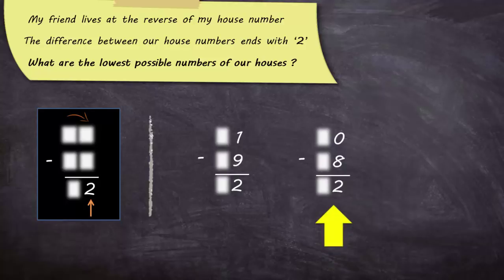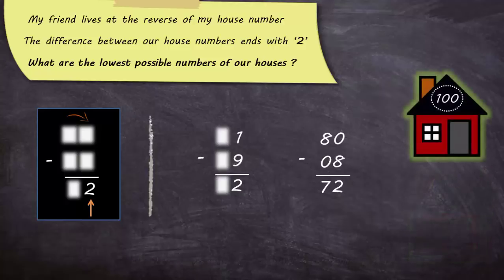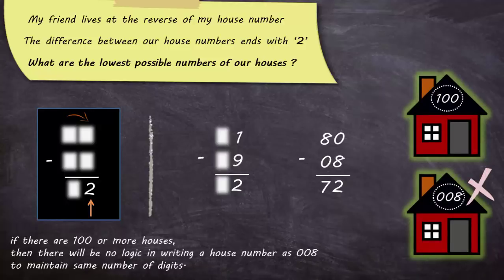Consider this case. Since the house numbers are reversed, the number should be 80 and 08. But it's not logical to write house numbers starting with 0 because if there are 100 or more houses, then there will be no logic in writing a house number as 008 to maintain same number of digits.